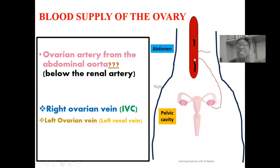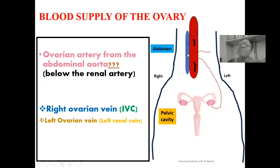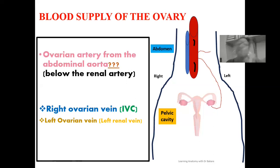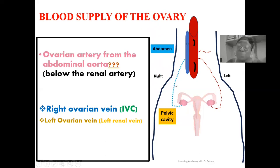Looking at the image, the right side is where we have the position of the inferior vena cava, located to the right of the abdominal aorta. The inferior vena cava collects venous blood from the inferior part of the body, which will finally drain deoxygenated blood into the right atrium. On the right side, you can see the right ovarian vein, highlighted in blue, being drained directly into the inferior vena cava. Its position makes this drainage direct and easy.